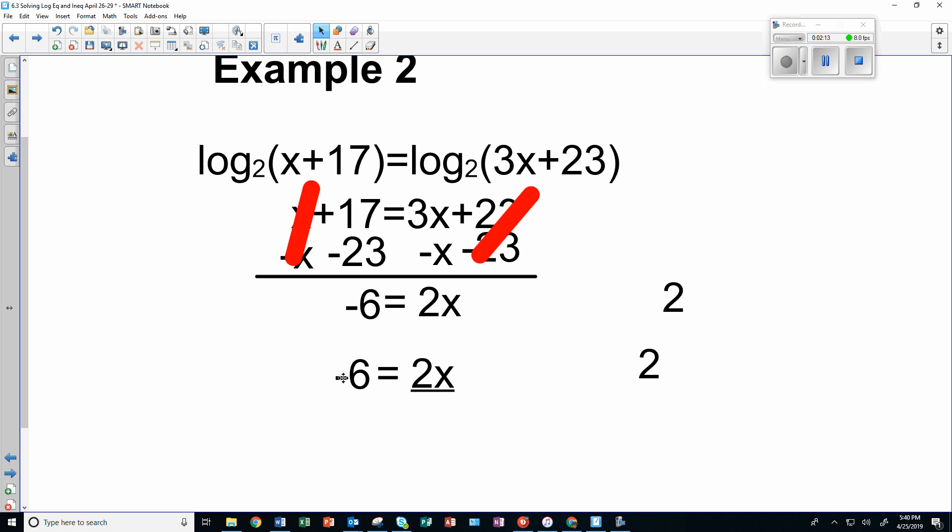Let's underline this one as well and divide both of those by 2. Our final answer is negative 3 equals x.